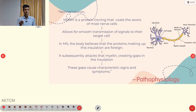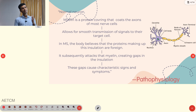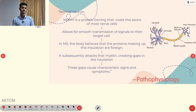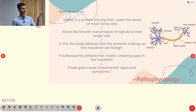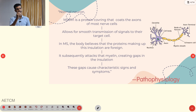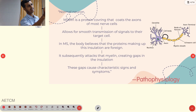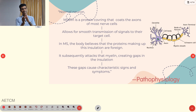What is meant by myelin sheath? Myelin is a protein covering that coats the axon of most nerve cells. Its function is to allow smooth transmission of signals to their target cells — the signal jumps along in a wave-like fashion, enabling smooth nerve signal transmission.